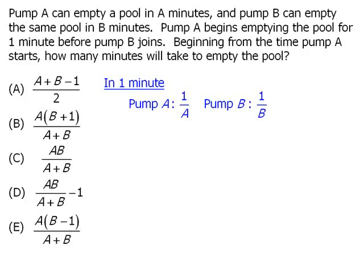Similarly, we know that the fraction of the pool that pump B can empty in one minute is equal to 1 over B. Now, to determine what both pumps can do when working together, we'll add our two fractions to get the following.